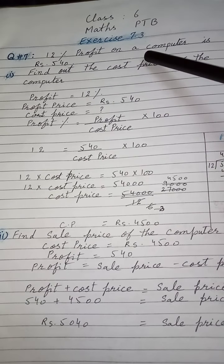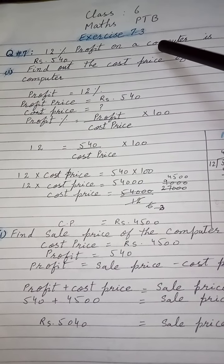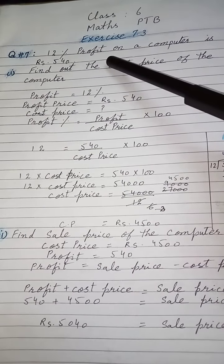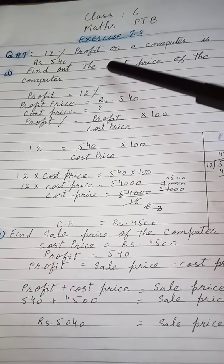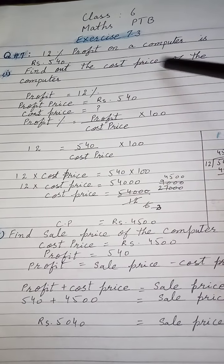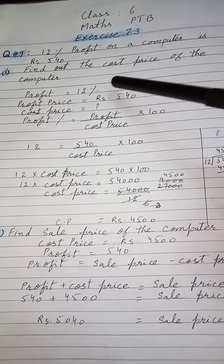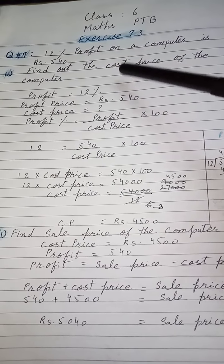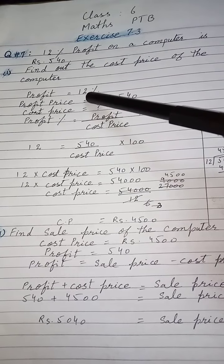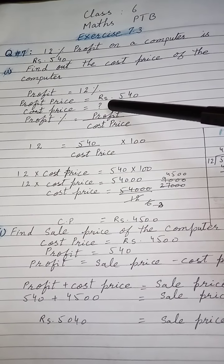Question number seven: 12 percent profit on a computer is rupees 540. A computer sale کیا گیا ہے اس کے اوپر جو profit ہے وہ 12 percent اور profit کی amount 540 ہے۔ Part one میں find out the cost price of the computer پوچھا گیا ہے۔ آپ نے بتانا ہے کمپیوٹر کتنے کا خریدا گیا تھا۔ Given information: profit 12 percent، profit price 540، cost price find out کرنی ہے۔